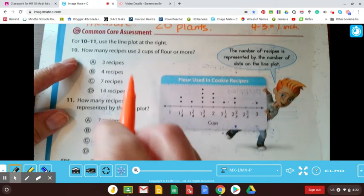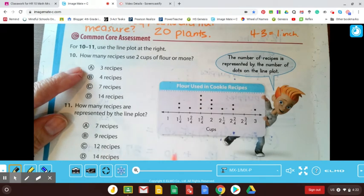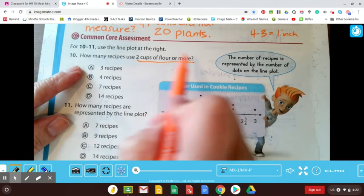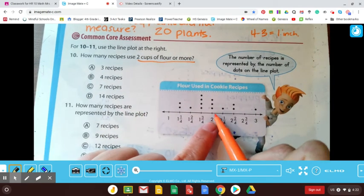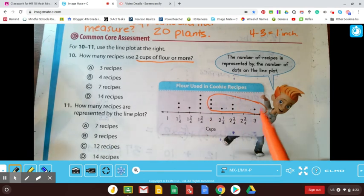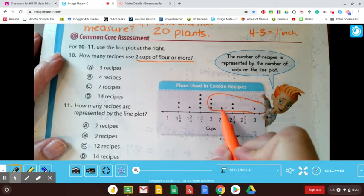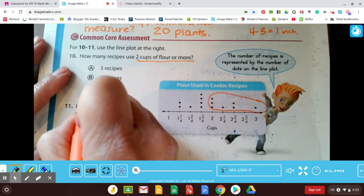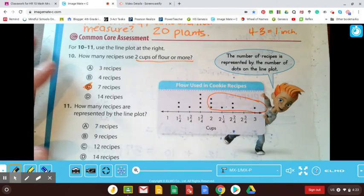So the number of recipes is represented by these dots here, and these are the cups of flour. Okay. So how many recipes use two cups of flour or more? So here's two cups and over to the right would be more. So it would really be all of these, right? Two cups or more. So let's count: one, two, three, four, five, six, seven. I would say seven recipes. So C would be my correct answer.